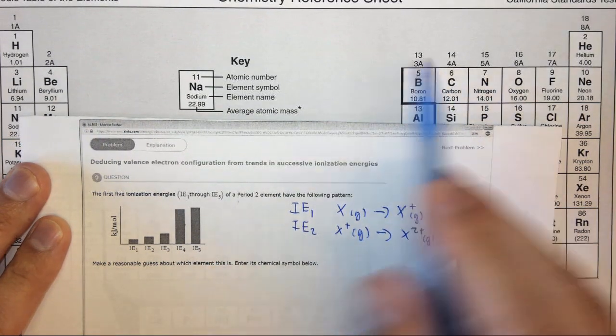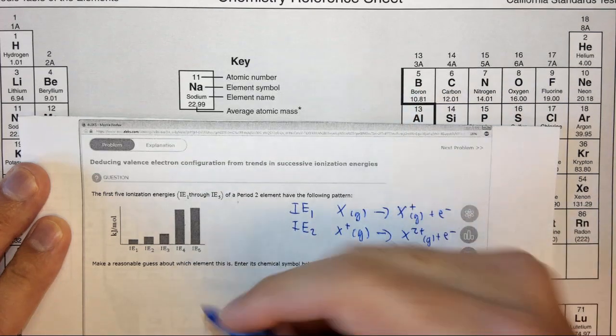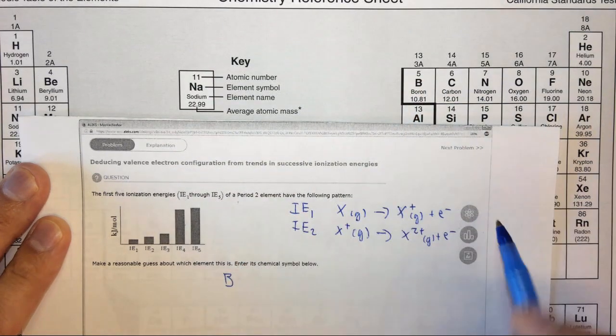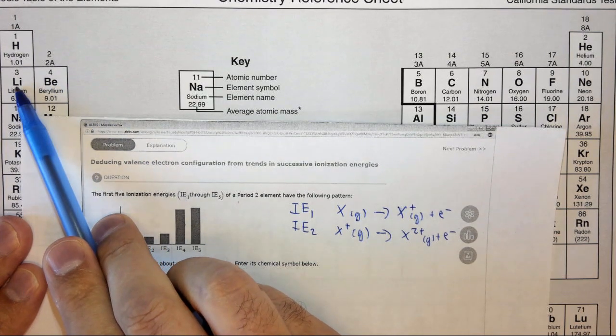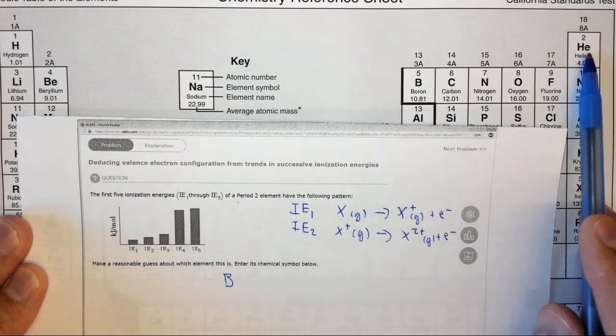If you look, period two, group three A, we find boron. So it takes a little bit of energy to take away the first one, a little bit more to take away the second one, a little bit more to take away the third one.